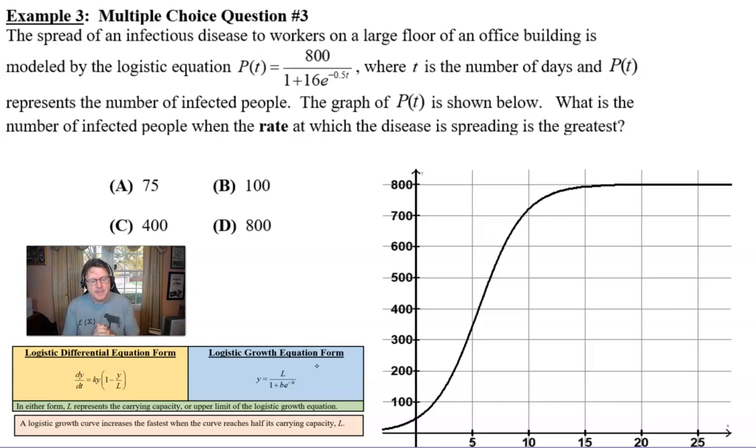So let's read our example number 3. It says the spread of an infectious disease to workers on a large floor of an office building is modeled by this logistic differential equation. We've got P(t) = 800/(1 + 16e^(-0.5t)), where t is the number of days. P(t) represents the number of infected people, much like our zombie infestation activity that I used in video one. The graph of P(t) is shown below. What is the number of infected people when the rate at which the disease is spreading is the fastest?